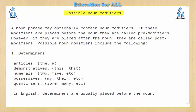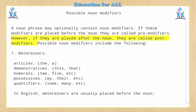Possible noun modifiers. A noun phrase may optionally contain noun modifiers. If these modifiers are placed before the noun, they are called pre-modifiers. However, if they are placed after the noun, they are called post-modifiers.